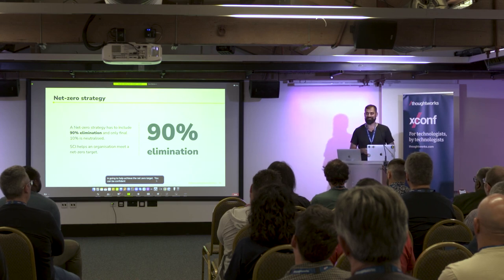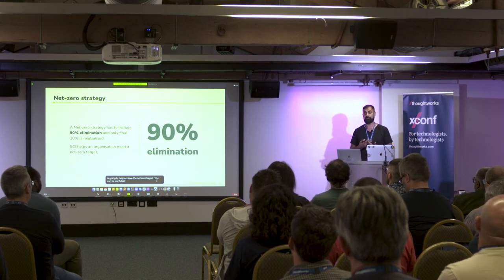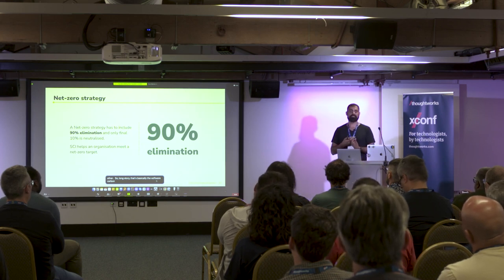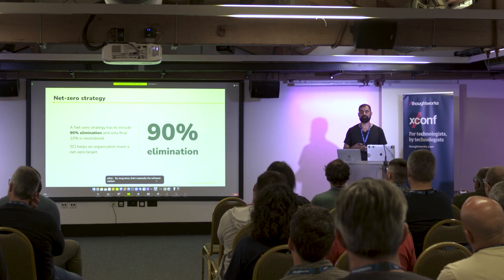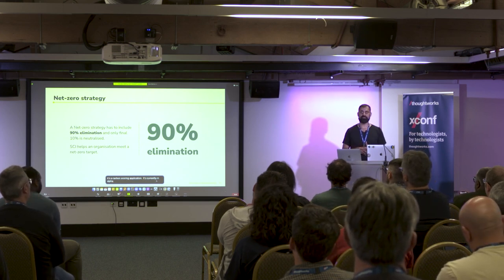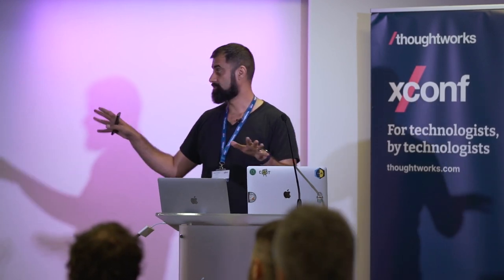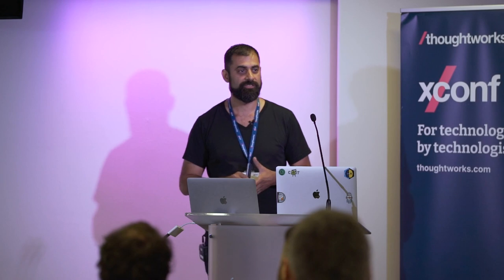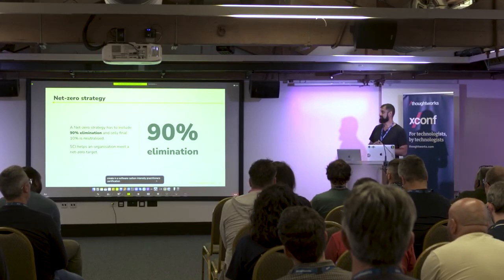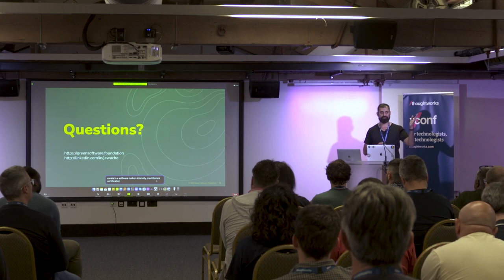That's basically the Software Carbon Intensity specification — a carbon score for your application. It's currently in alpha and will be released at COP27 in November. It comes alongside a training and certification program also launching at COP27, where you can be certified as a green software practitioner. There will also be a Software Carbon Intensity practitioner certification, so you can be certified as someone who can measure an application on the SCI protocol. Thank you very much.